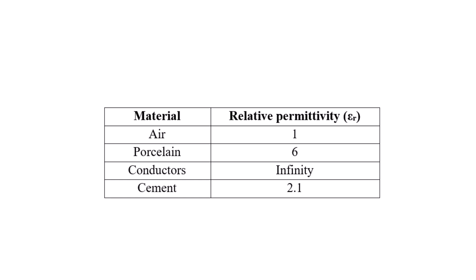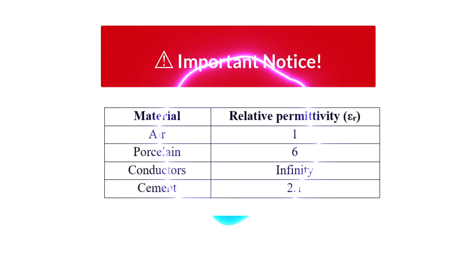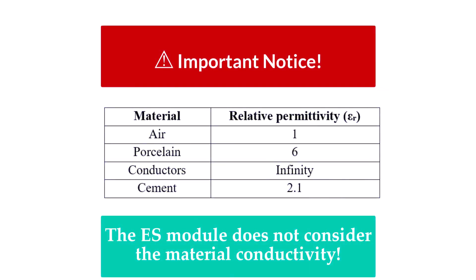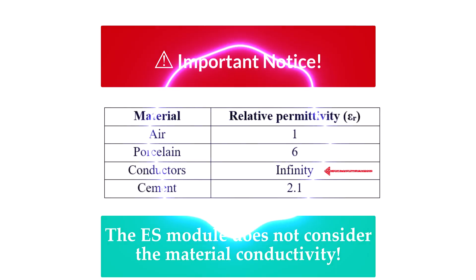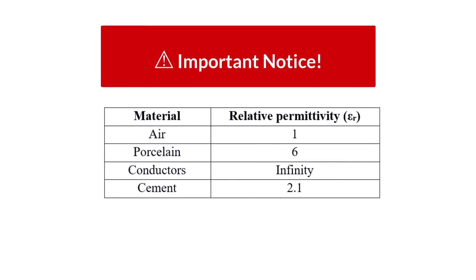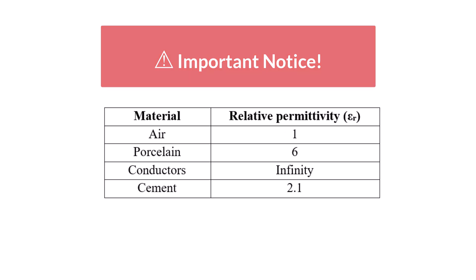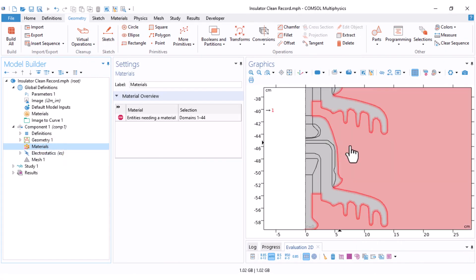Because the electrostatic module does not consider conductivity, we define our conductors by setting a very large relative permittivity — in other words, a conductor is like a dielectric with a permittivity that reaches infinity. If you don't do that, the software does not know that these parts are metal and have high conductivity.